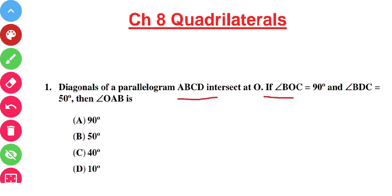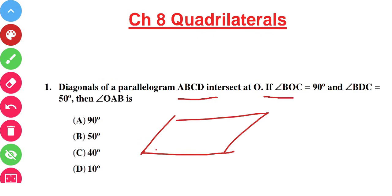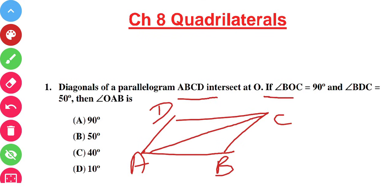I am drawing a parallelogram here — this is parallelogram A, B, C, and D. The diagonals are AC and BD, and they intersect at O. It is given that angle BOC is equal to 90 degrees, and angle BDC is equal to 50 degrees.